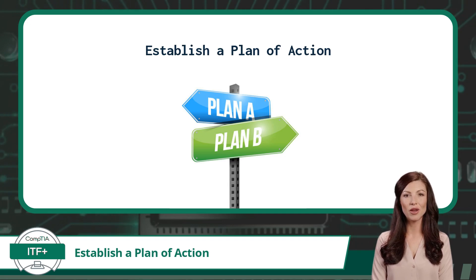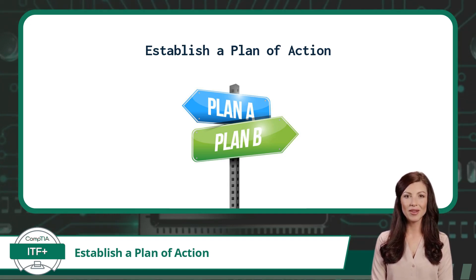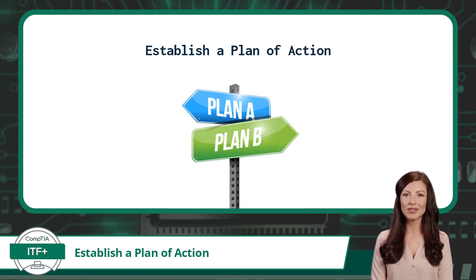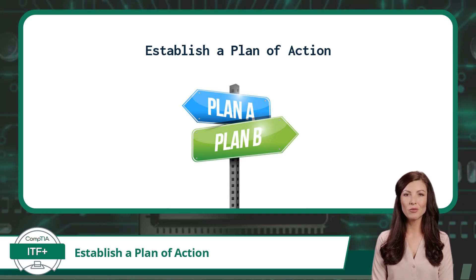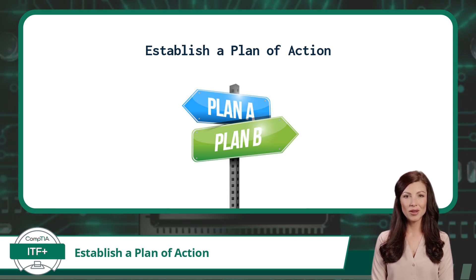Another item to be aware of when establishing a plan is to identify the potential side effects of your plan. Many times in IT, systems are interconnected. A change to one system can often have unintended side effects on another system. You may not be able to prevent every side effect, but proper planning can at least keep these to a minimum.